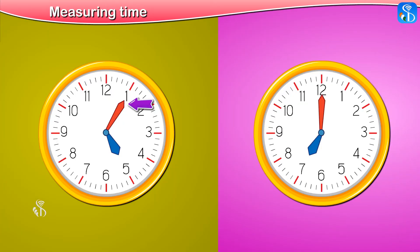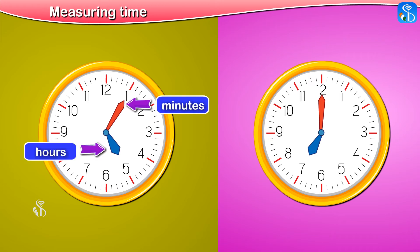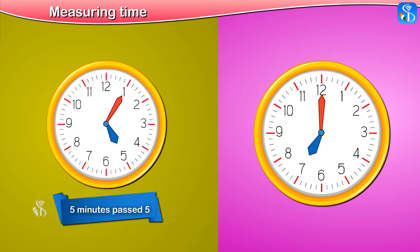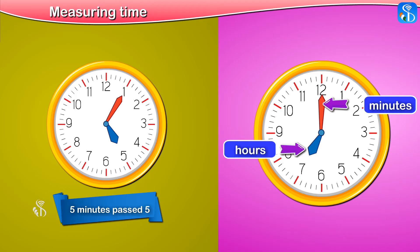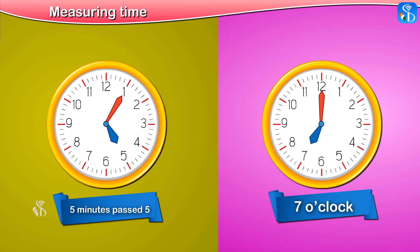Now look here. The minute hand in this clock is at 1 and the hour hand is at 5. It means that the time is 5 minutes past 5. The minute hand in this clock is at 12 and the hour hand is at 7. So we will say it is 7 o'clock.